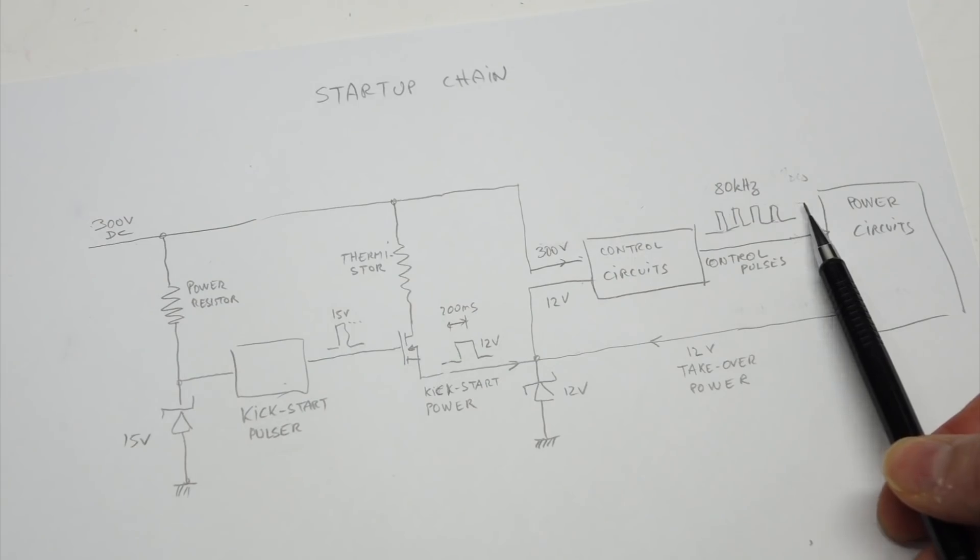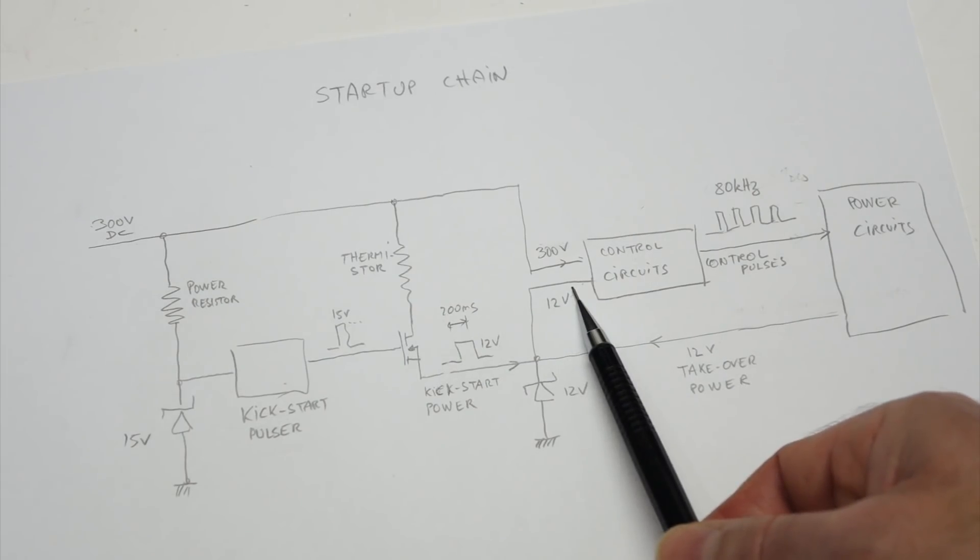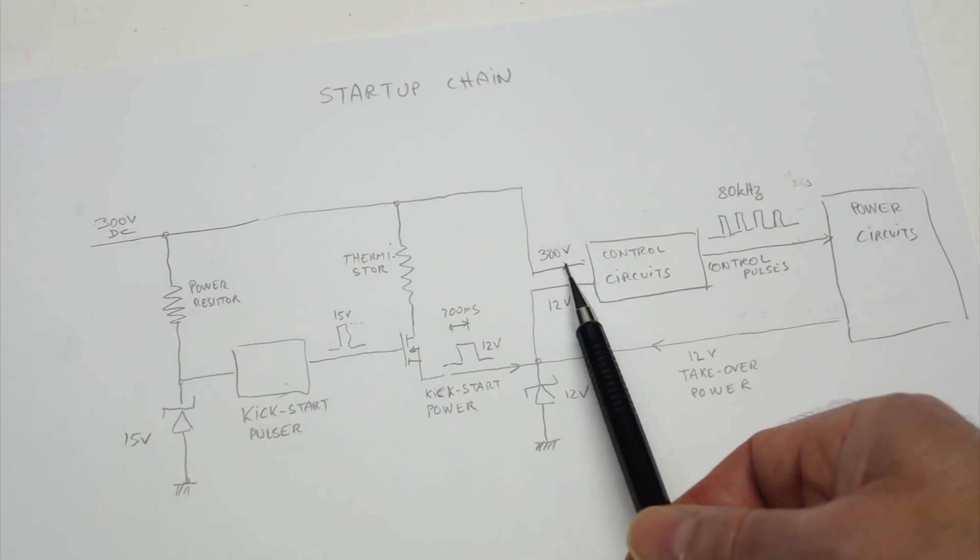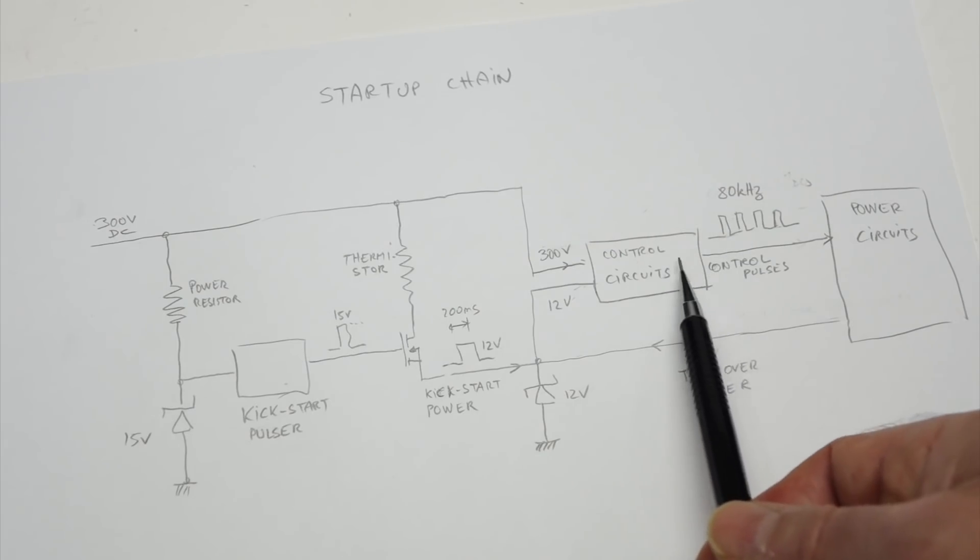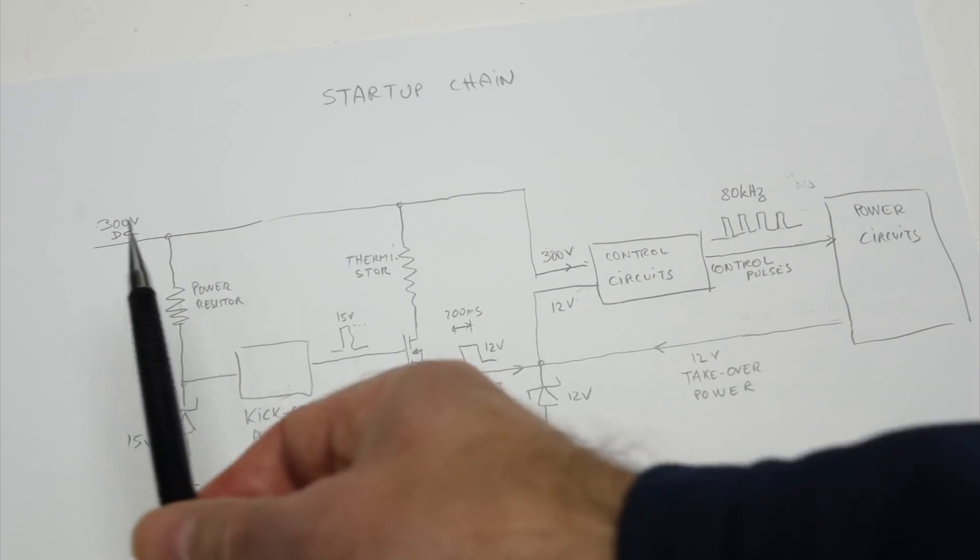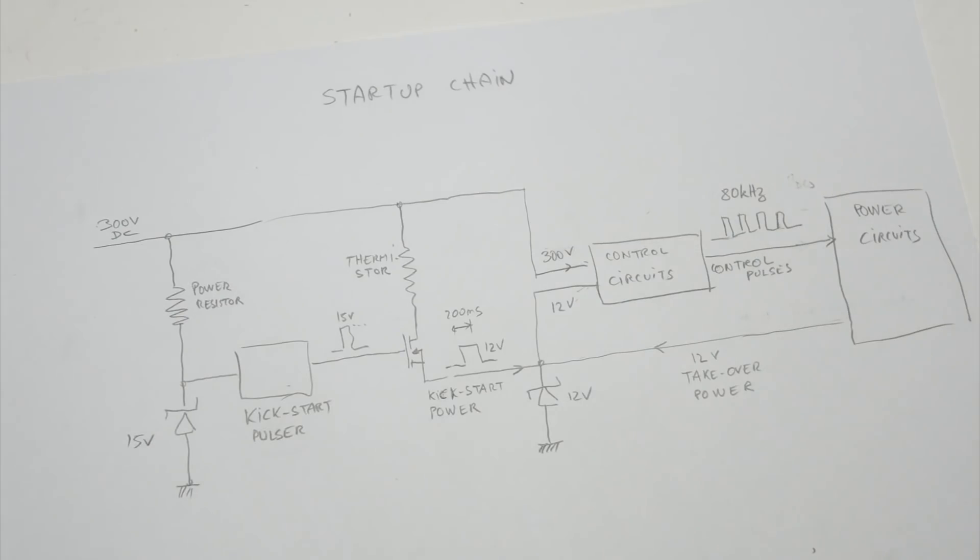And unfortunately I cannot just give 12 volts to this thing, because unless it has 300 volts, it will go into under voltage mode and stop the generation of the control pulses. So I have to go through the whole chain to check it works.